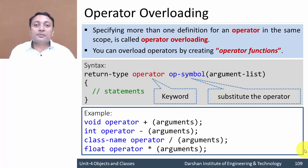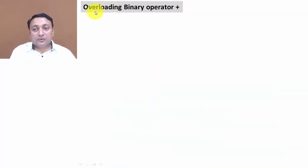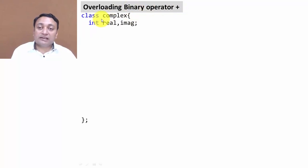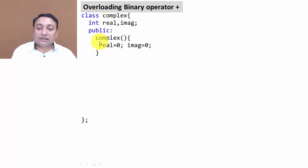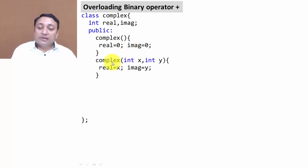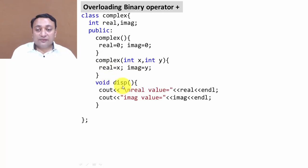Now the question is how to write operator functions in our program and how to invoke them from main. Here is an example program for overloading the binary operator plus — plus is a binary operator and takes two operands. We have a class complex, representing a complex number with a real part and an imaginary part, so we have created two variables: real and imaginary. We create a default constructor assigning zero to both, and a parameterized constructor with arguments x and y to initialize real and imaginary. We also create a display function to show the values of real and imaginary for an object.